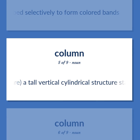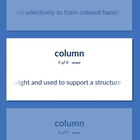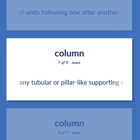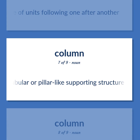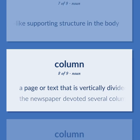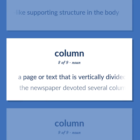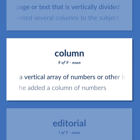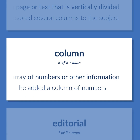Column (architecture): A tall vertical cylindrical structure standing upright and used to support a structure. A line of units following one after another. Any tubular or pillar-like supporting structure in the body. A page or text that is vertically divided. Example: The newspaper devoted several columns to the subject. A vertical array of numbers or other information. Example: He added a column of numbers.